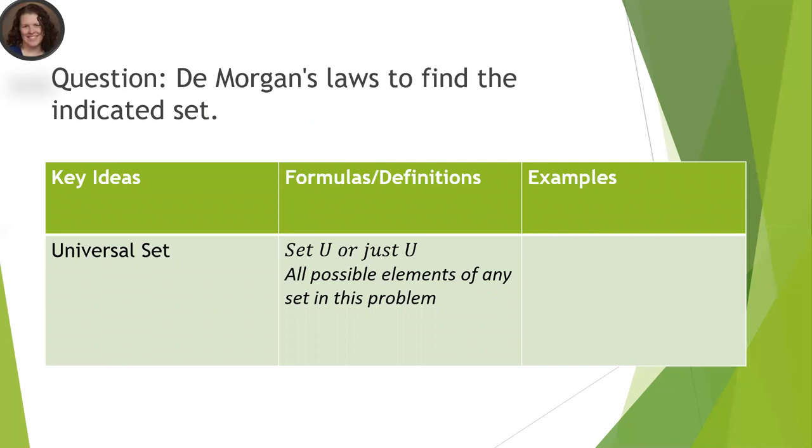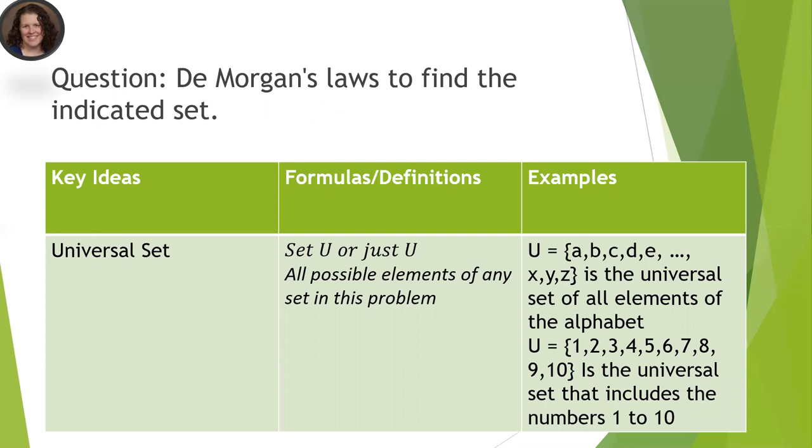So that's our universal set. So it's always written with the letter U. And here's some more examples. So the universal set could be all the letters of the alphabet. It could be the numbers 1 through 10. It could be the days of the week or the months of the year.